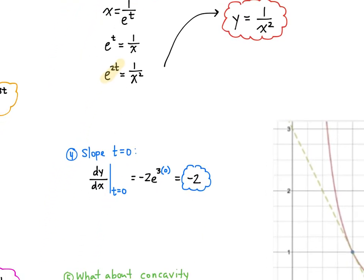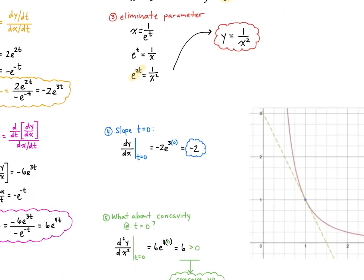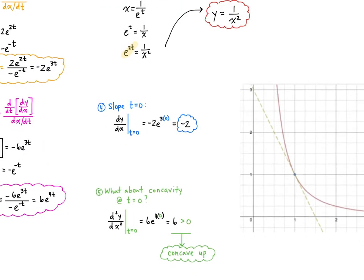Next, we find the slope at t = 0. The slope is dy/dx, which we already found in step one as −2e^(3t). Evaluating at t = 0: −2 times e^(3·0) = −2 times 1 = −2. So the slope is −2 at t = 0.